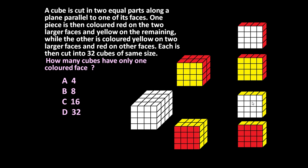Now, how many cubes have only one colored face? Looking at one section: the corner cubes have three colored faces, and the edge cubes have two colored faces. Only the four unit cubes on the inner face — whose only colored face is the back — have just one colored face. So this section gives only four such cubes.